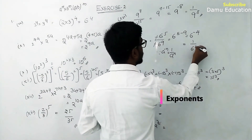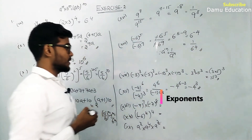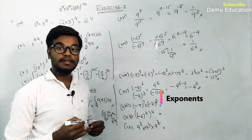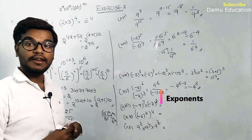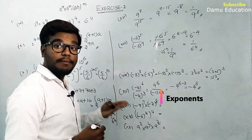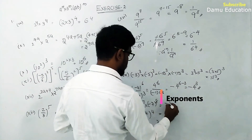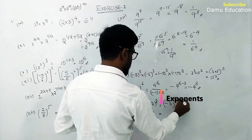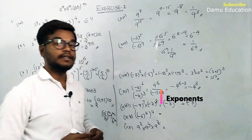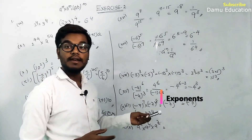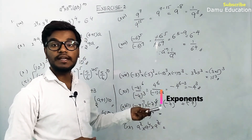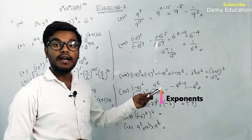Next: minus 7 whole power 7 into minus 7 whole power 8. Taking a as minus 7, using a power m into a power n equals a power m plus n: minus 7 whole power 7 plus 8 equals minus 7 whole power 15. Since 15 is odd, minus stays, so the answer is minus 7 power 15.